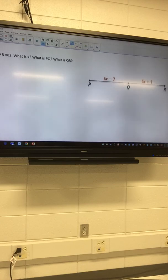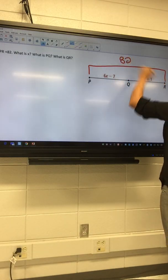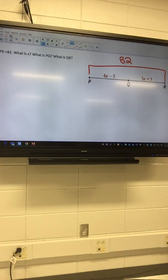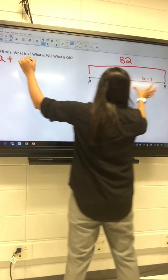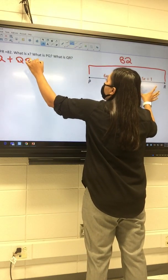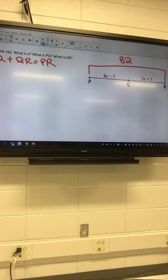Okay, I'm gonna do one more. So if PR is 82, that means the entire segment is 82. It says what is x, what is PQ, what is QR. What's your first step gonna be? Look at the last one, see what we did first. The segment addition postulate says PQ plus QR is equal to PR. We're basically adding together those segment things.